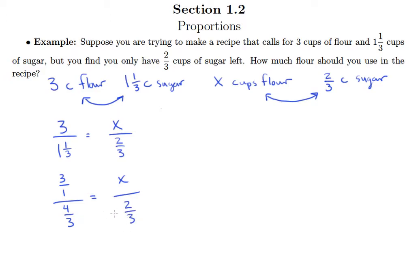Okay, and I'm running out of room down here. So I'm just going to let things follow over here. So this is going to be 3/1 times 2/3 is equal to 4/3 times X. And I can do some simplifying over here.